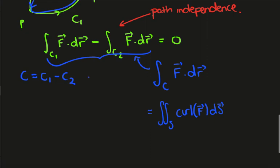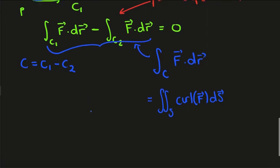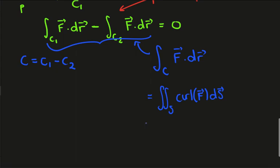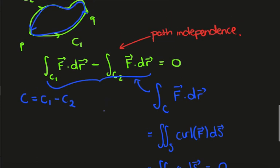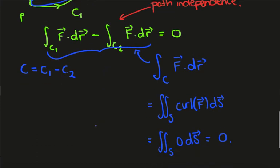remember, path independence is only true for conservative vector fields. And conservative vector fields are exactly those whose curl is 0. So we end up with a double integral over S of 0 dS hat. And this is exactly 0. So this gives us a very short proof of the path independence of conservative vector fields on simply connected regions.